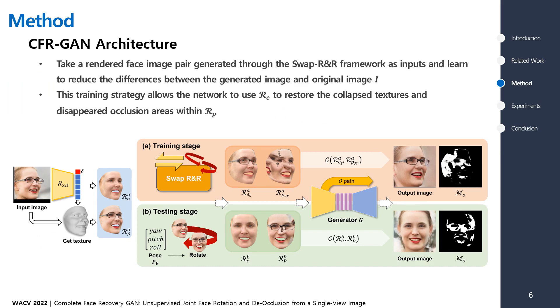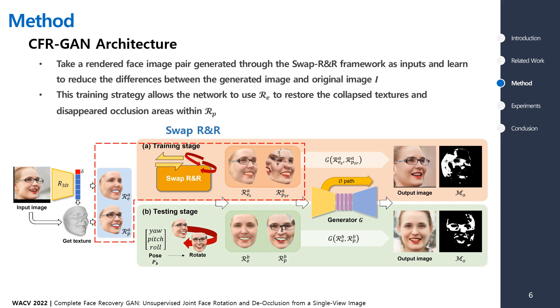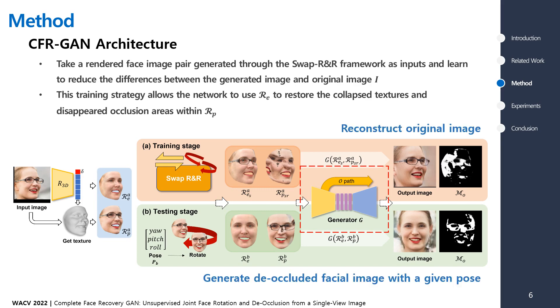Our method comprises three parts. First, occlusion-robust 3D face reconstruction and SwapRNR are used for complete face recovery. In this training stage, we take both rendered images RES and RPSR generated through the SwapRNR framework as inputs.